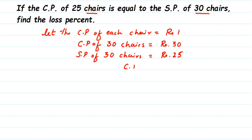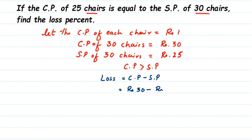You can see that CP is more than SP — selling price is less than cost price — which means we get a loss. To find the loss: loss equals cost price minus selling price. So ₹30 minus ₹25 gives us ₹5. So ₹5 is the loss here.